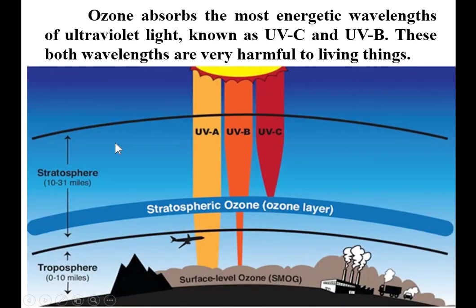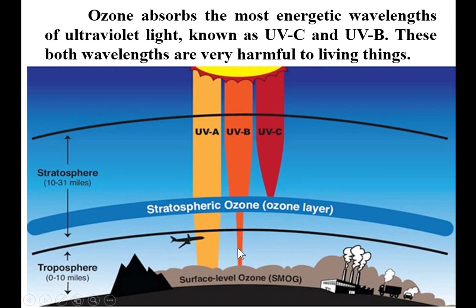Looking at this figure, there are three categories of UV — ultraviolet: UVA, UVB, and UVC — and this is the stratosphere. The atmosphere of Earth's surface has a first portion called the troposphere, and then the stratosphere above it. In the stratosphere, the ozone layer prevents UVB and UVC, both of which are very harmful to living things. Unfortunately, the ozone layer is now not completely preventing UVB and UVC, and some UVB is now reaching Earth's surface due to ozone depletion.